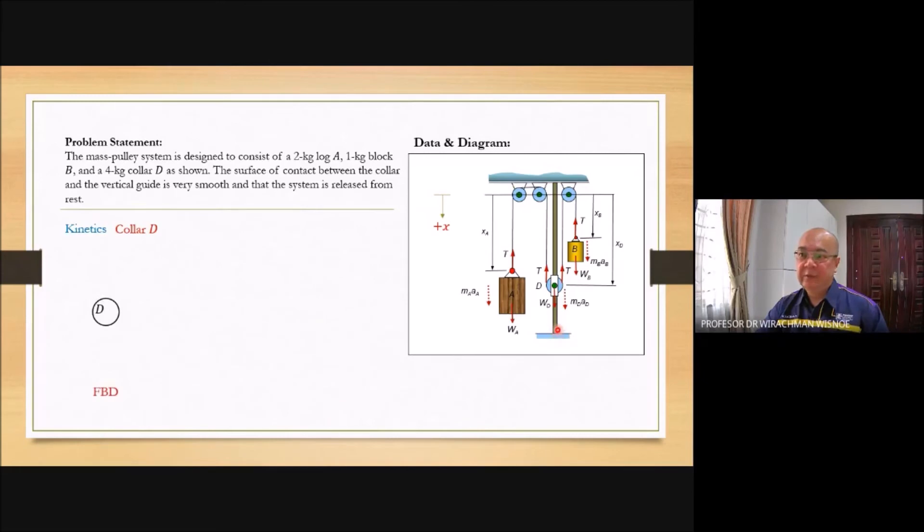And then collar D. Draw the free body diagram. The weight. But now we have two cables connected. So you have two T. You assume there is no friction on the pole. If there is friction you need to add. Depending on the assumption of direction of motion. If you assume it moves downward, so the friction will be going up. But here we put assumption there is no friction. So these are the three forces.